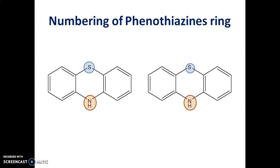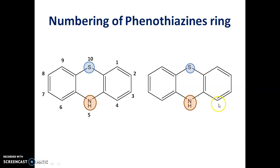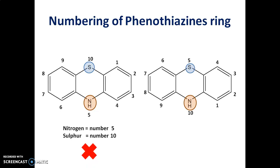Now, how to number this phenothiazine ring? We can number it starting from the carbon next to the sulfur atom, or from the carbon next to the nitrogen atom. In the first method, numbering 1 through 10 gives sulfur the number 10 and nitrogen the number 5. In the second method, sulfur gets number 5 and nitrogen gets number 10.